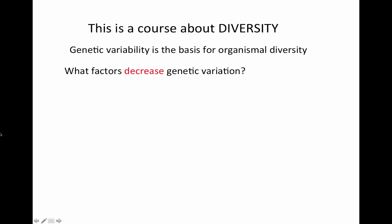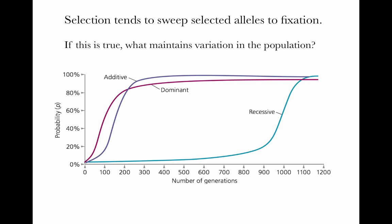That leaves factors that decrease and maintain genetic variation, which we'll be building up throughout this unit on population genetics. Factors that decrease genetic variation include the selective sweep. With additive or incomplete dominance, a rare new beneficial mutation very rapidly increases in allele frequency, going all the way up to fixation.